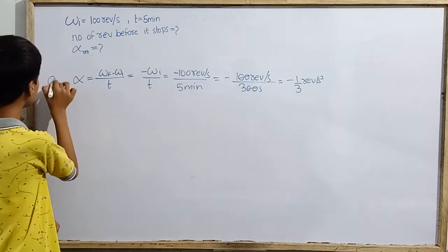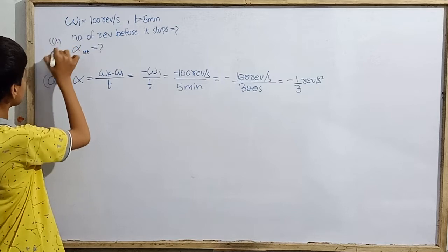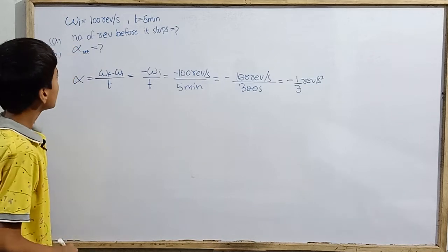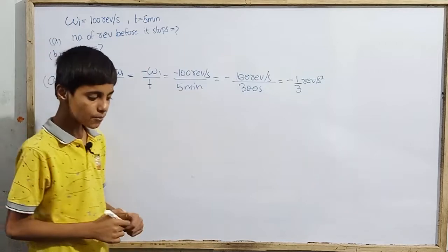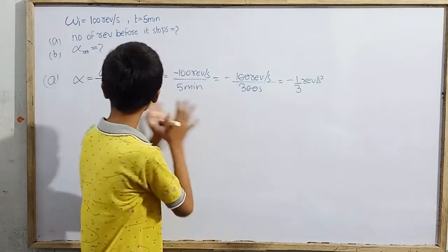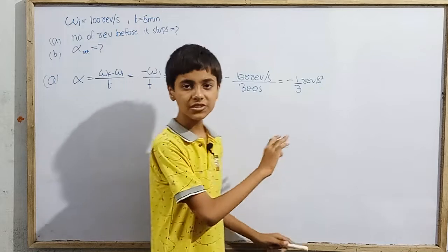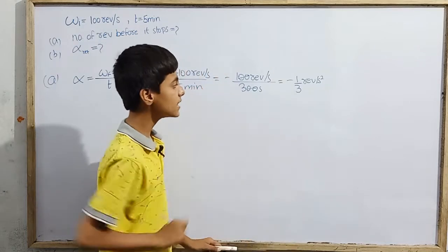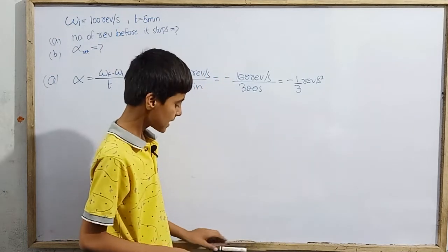We are also solving part A and part B. Now, the number of revolutions before it stops. We now have the retardation value. The acceleration is −1/3 revolution per second squared, so the retardation is 1/3 revolution per second squared.